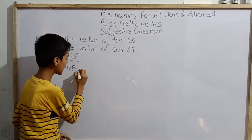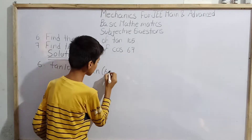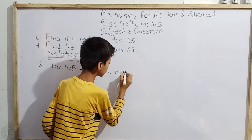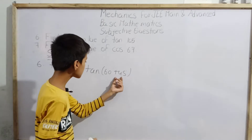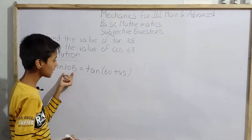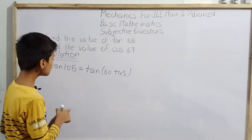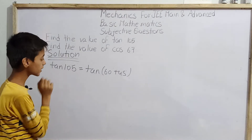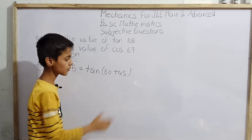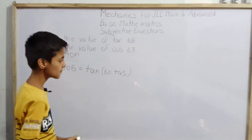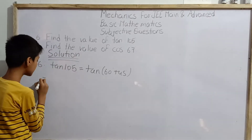Now, can we write tan 105 degrees in a different form? Yes — we can write it as tan(60° + 45°), because 60 degrees plus 45 degrees equals 105 degrees. So we will write tan 105 degrees as tan(60° + 45°) and try to evaluate this.